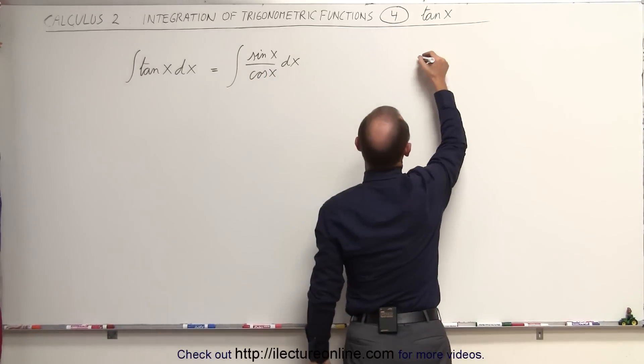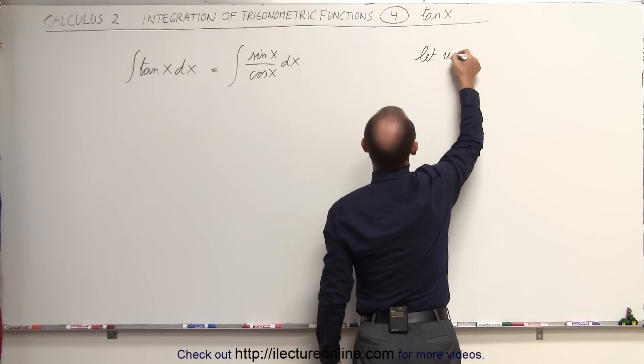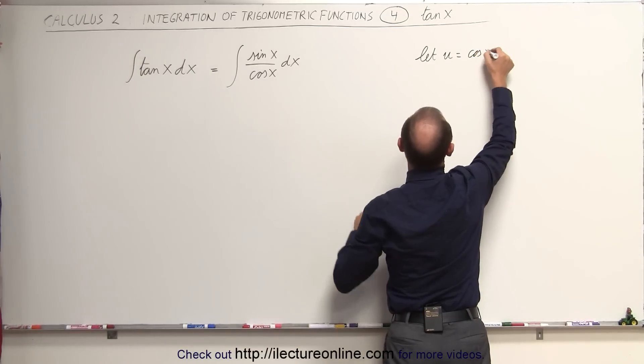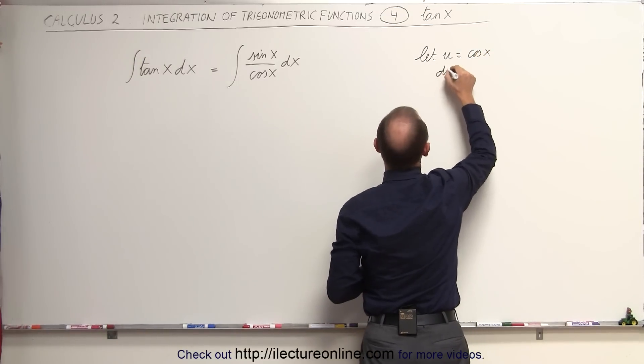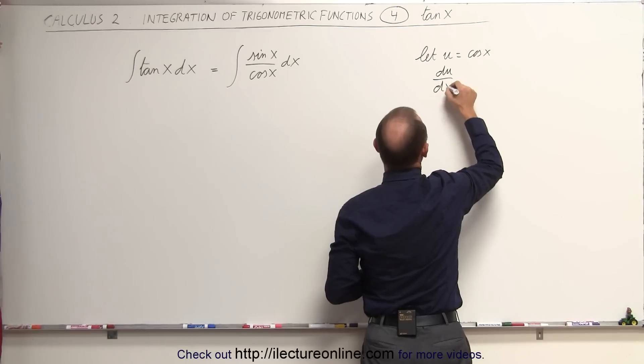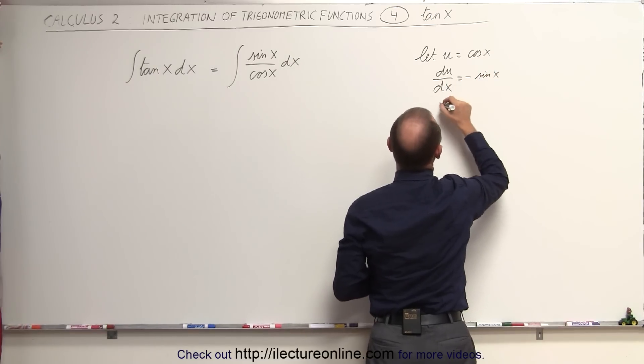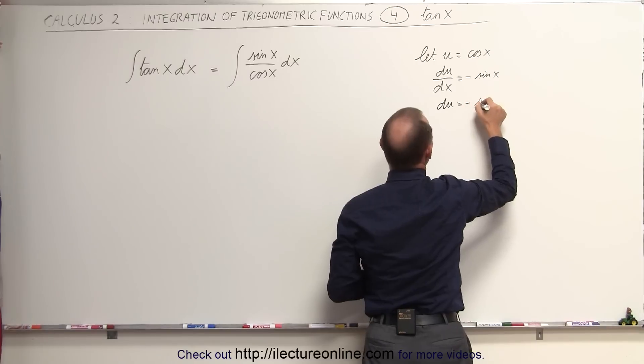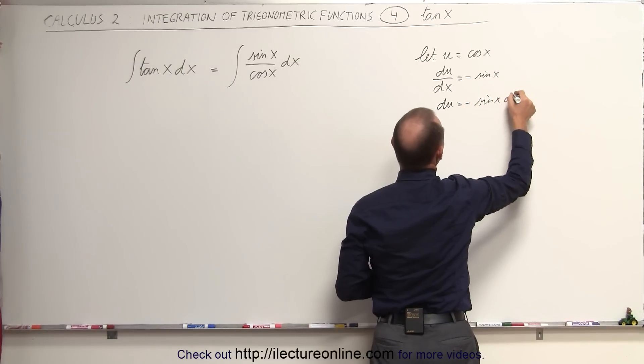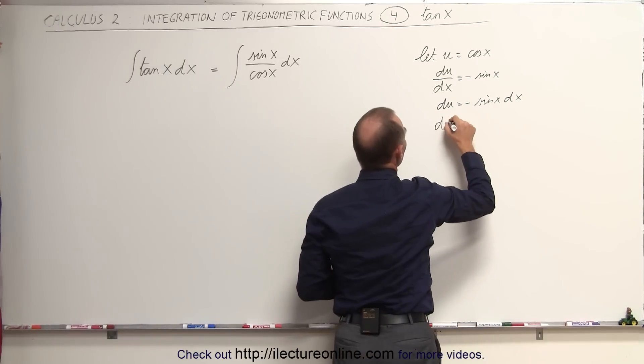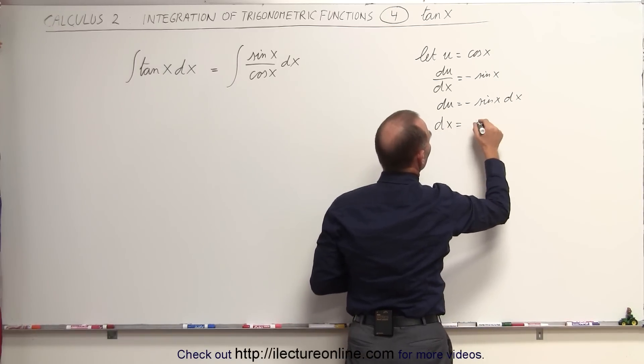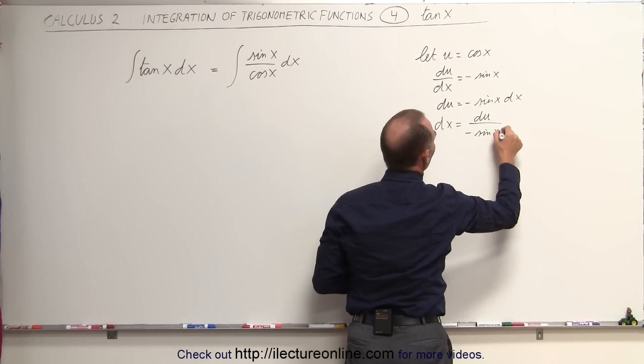if we say let u equal what's in the denominator, the cosine of x, then we can say that du/dx is equal to the negative sine of x, and so du can be written as negative sine of x times dx, or dx can be written as du divided by the negative sine of x.